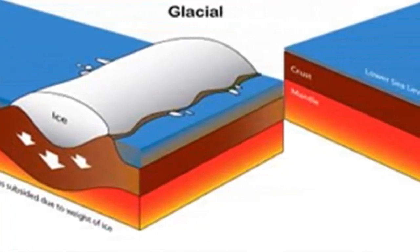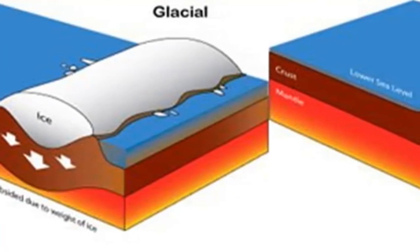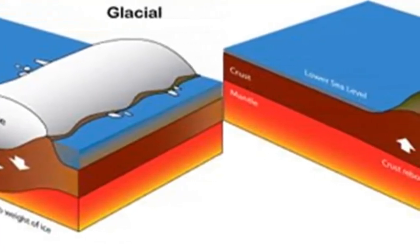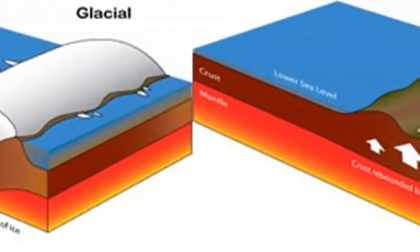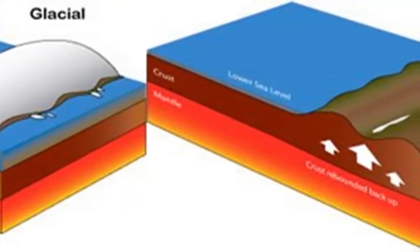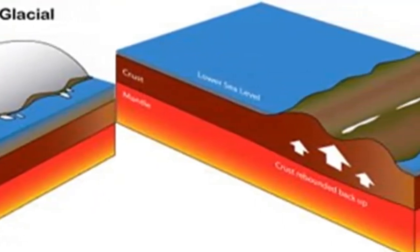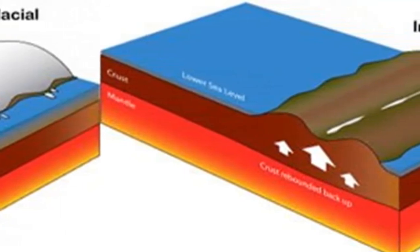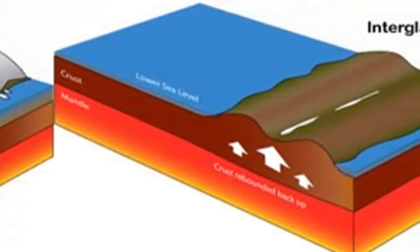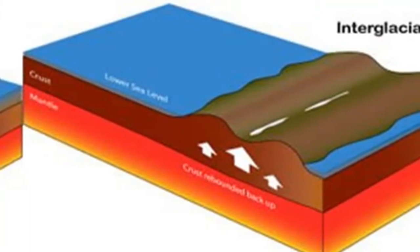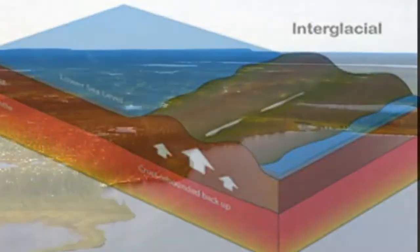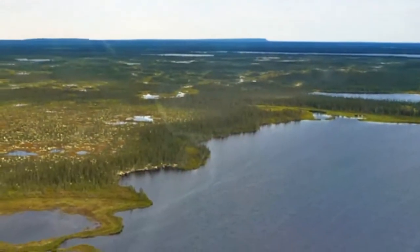Isostatic adjustment. Visualize what would happen if another small block of wood were placed atop one of the blocks. The combined block would sink until a new isostatic gravitational balance was reached. However, the top of the combined block would actually be higher than before, and the bottom would be lower.